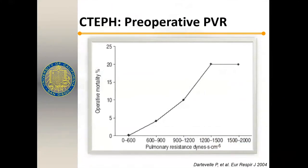Preoperative pulmonary vascular resistance is a predictor of mortality. Data from the Paris group showed that the higher the pulmonary artery pressures, the higher the operative mortality. Clearly, if patients have a PVR over 1,000, there's a fairly steep increase in the risk curve.